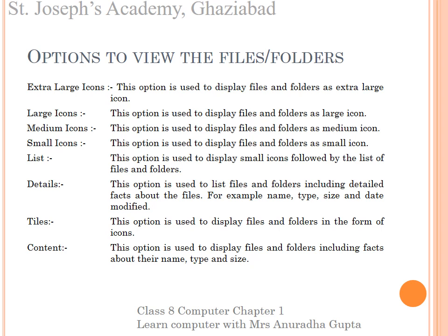Number 7, Tiles: this option is used to display files and folders in the form of icons. Number 8, Content: this option is used to display files and folders including facts about their name, type and size.